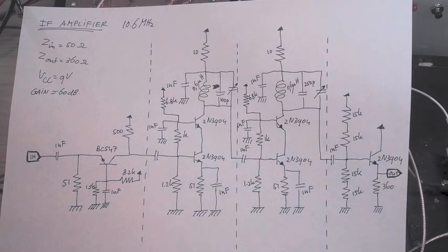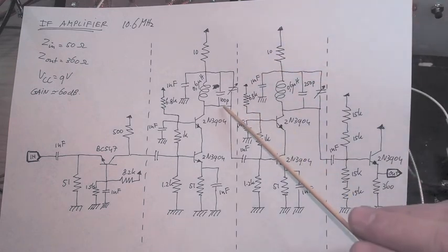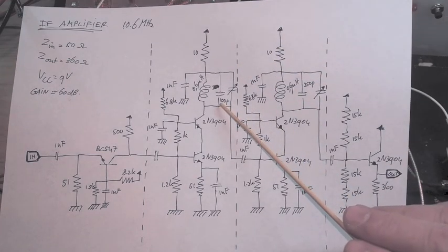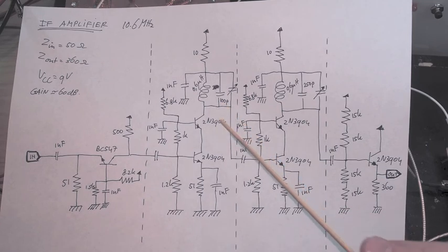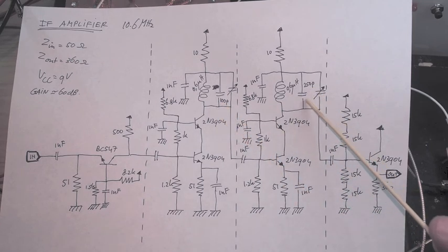These double cascode amplifiers are nearly the same. The only difference is in this capacitor which is 100 pF in this one and 250 in this one.